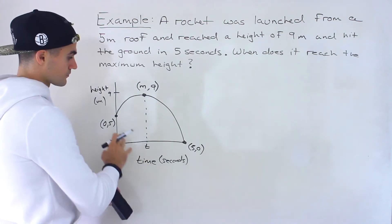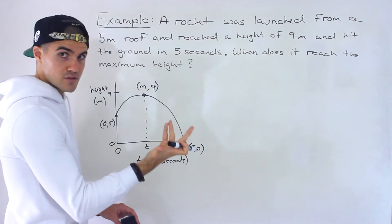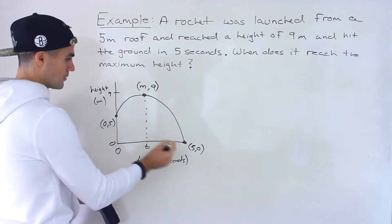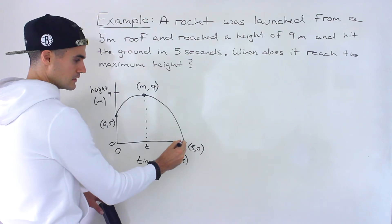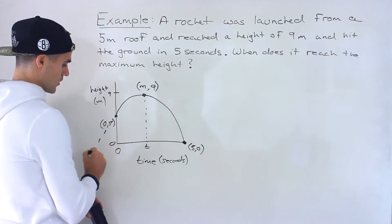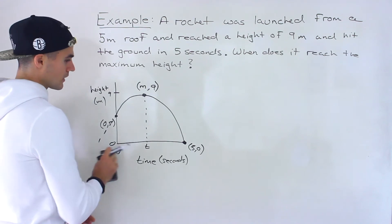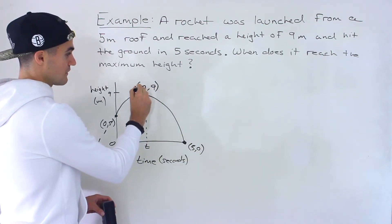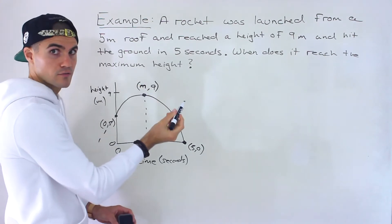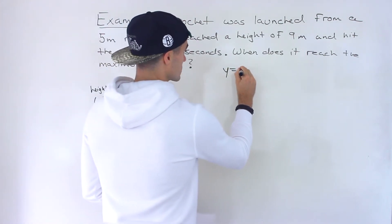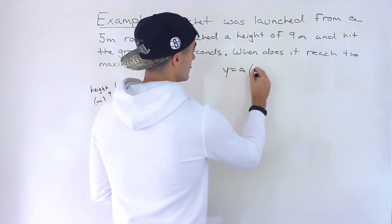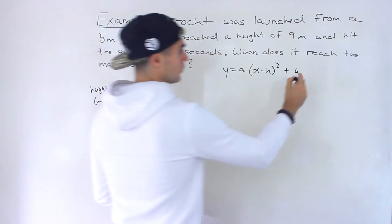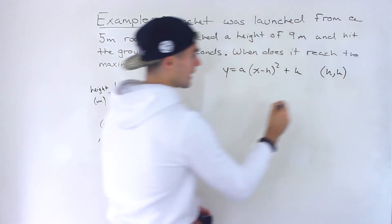What we can do is put this in vertex form. You don't necessarily have to — you can use standard form or factored form. The problem with factored form is we only have one intercept; we don't know where the other one is. So the best form to use here is vertex form, especially because we're trying to find part of the vertex. In general, vertex form is y = a(x − h)² + k, where the vertex is (h, k).